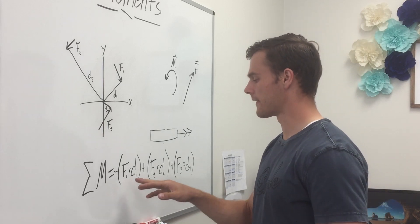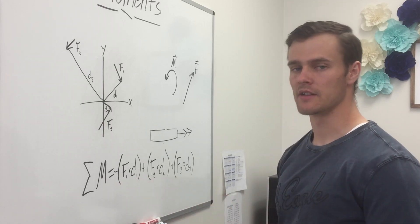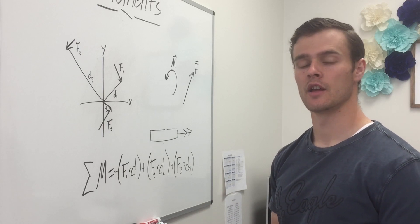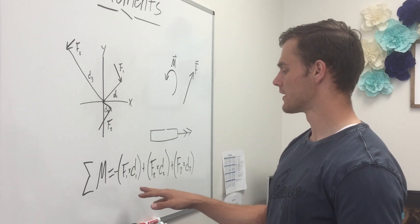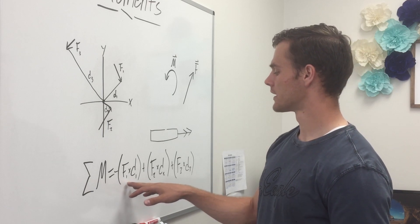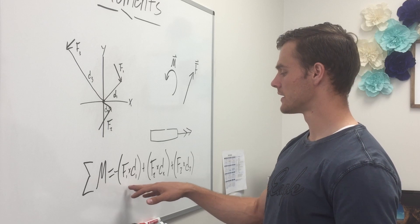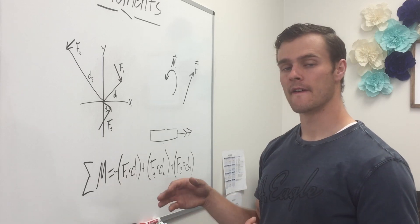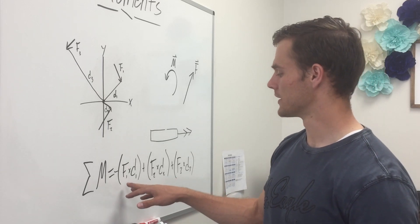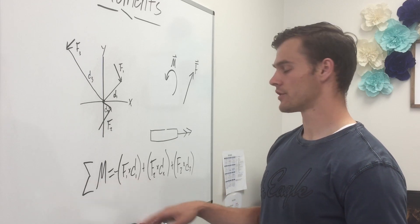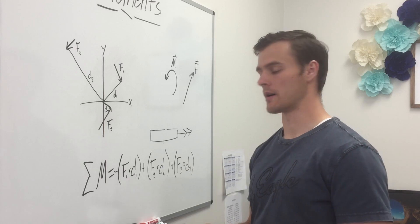Remember that force times distance gives us a unique unit: force times a distance. That could be pounds times feet, giving pound-feet, or newtons times meters, giving newton-meters. Those are the units of torque or a moment.